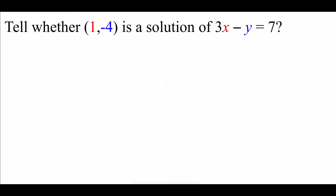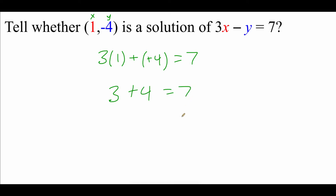Now we've got the same equation, but testing the ordered pair (1, negative 4). The first number is the x value, so we get 3 times 1. The second number is the y value, so we plug in negative 4 — giving us 3 times 1 minus negative 4, checking if that equals 7. Now 3 times 1 is 3, and subtracting negative 4 is the same as adding 4. So 3 plus 4 is 7, which matches both sides — yes, the point (1, negative 4) is a solution.